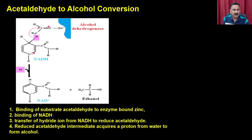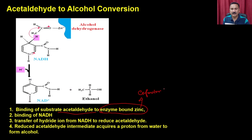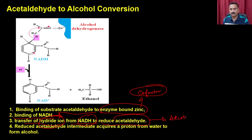In the alcohol dehydrogenase reaction, acetaldehyde is converted to ethanol. The substrate acetaldehyde forms an enzyme-bound zinc complex — zinc is an important cofactor in this reaction. Then NADH binds and transfers a hydride ion to reduce the acetaldehyde, forming alcohol. With this, I conclude this lecture. In the subsequent lecture, we will discuss more aspects related to enzymes. Thank you.